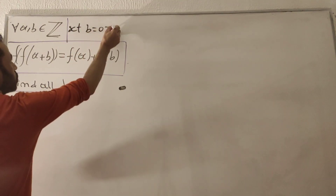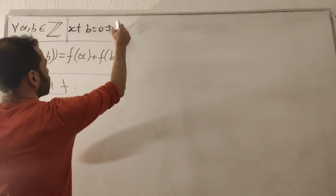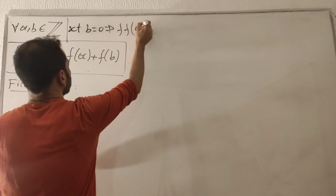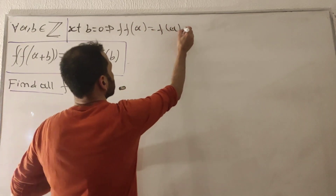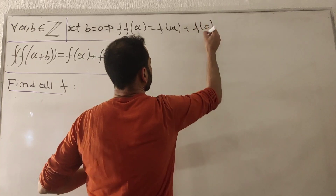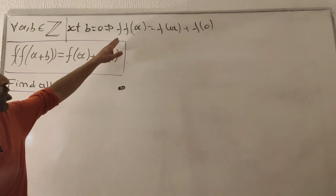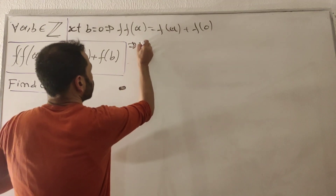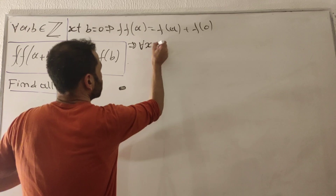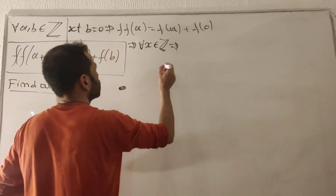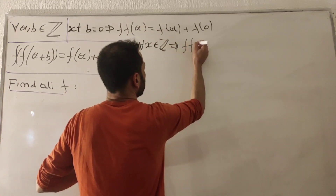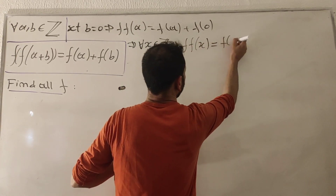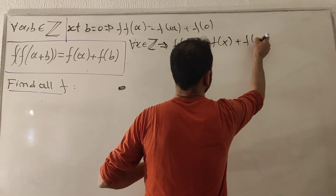Setting b = 0, the expression becomes f(f(a)) = f(a) + f(0). Rewriting this for all integers x, we get f(f(x)) = f(x) + f(0). This is our first key equation.